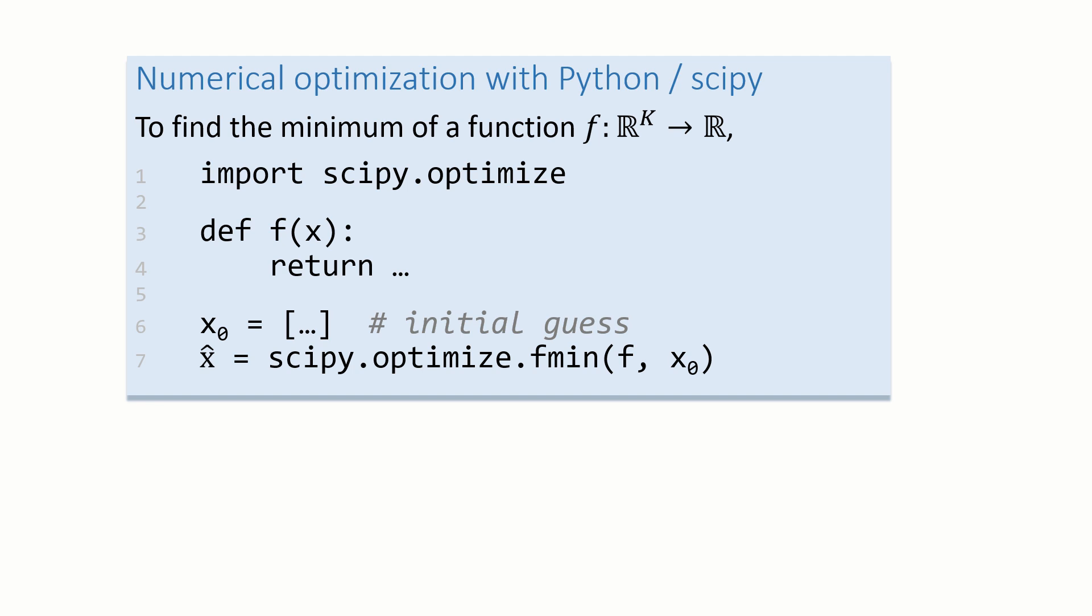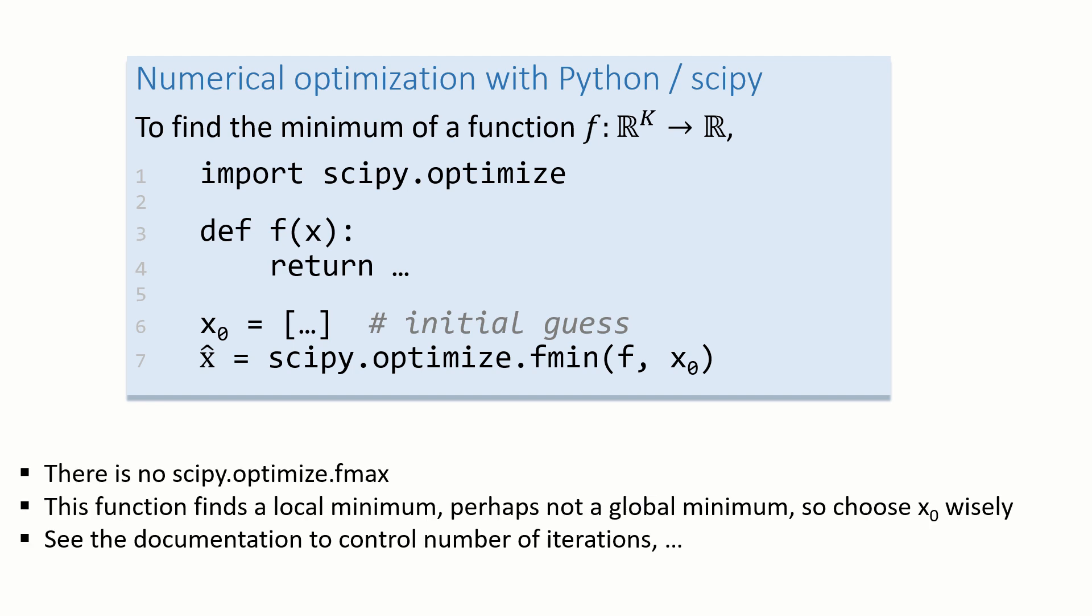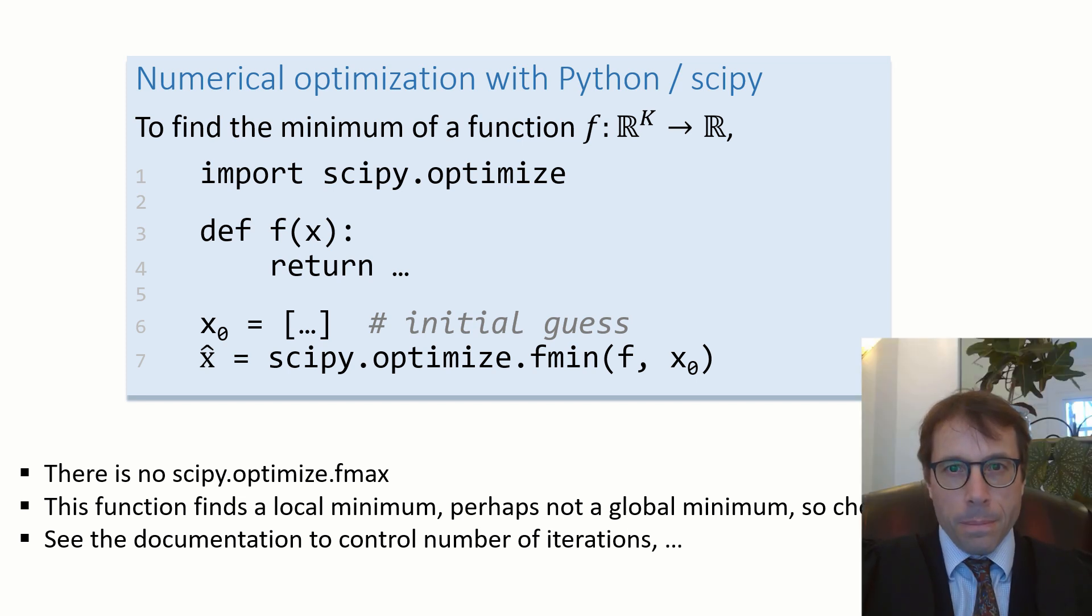A few things to watch out for: there is no optimize.fmax function. If you want to maximize, just stick a minus sign in front of the thing you want to maximize and then minimize it. This routine isn't going to find a global minimum necessarily—it only finds a local minimum. So you ought to have an idea of what your function looks like and you want to choose the initial guess wisely. That's all there is to optimization, except for one little problem.